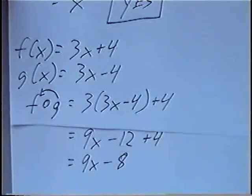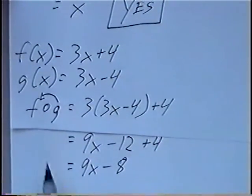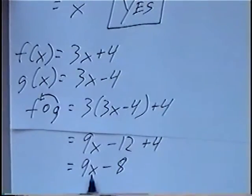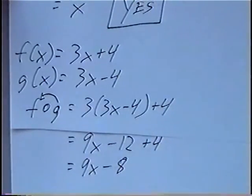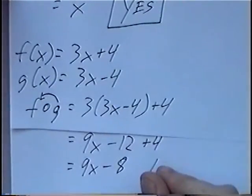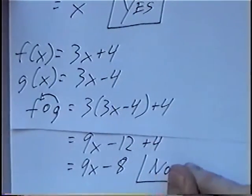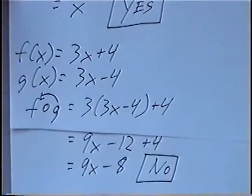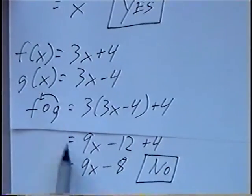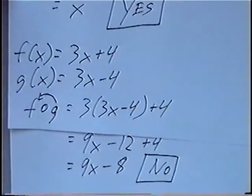For these to be inverses, the composition should equal just x — not 9x minus 8. Anytime you get something different than x, the answer is no, these are not inverses. We don't even need to do the second composition, since the first composition is not x — they are not inverses.